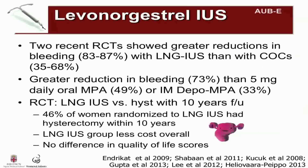Two recent randomized control trials showed greater reductions in bleeding — 83 to 87 percent — with the levonorgestrel intrauterine system than with combined oral contraceptives. Another study with a more mixed population showed greater reductions in bleeding — 73 percent — than 5 milligrams of daily oral medroxyprogesterone acetate, which would be considered low dose, or intramuscular depo-medroxyprogesterone acetate. A randomized clinical trial of 236 women compared the levonorgestrel intrauterine system to hysterectomy with 10 years of follow-up. Although 46 percent of women randomized to the levonorgestrel intrauterine system had a hysterectomy within the subsequent 10 years, 54 percent avoided hysterectomy. This study found the levonorgestrel intrauterine system group had less cost overall and no difference in quality of life scores.